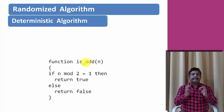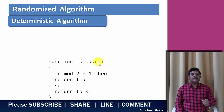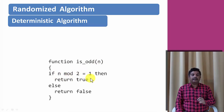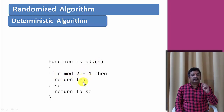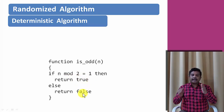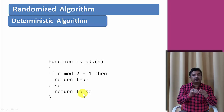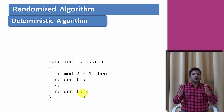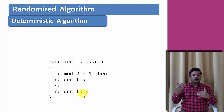Look at this isOdd function. A parameter n is passed and we compute n mod 2. If the output is 1, it returns true, meaning the value is odd; otherwise it returns false. So for any set of input, the output becomes 0 or 1 depending on whether the value is odd or even — we can always predict the output from the input.